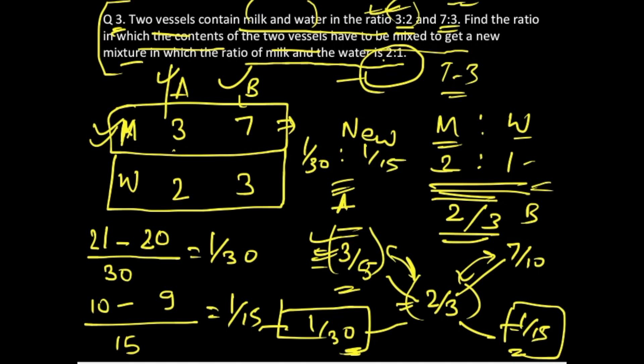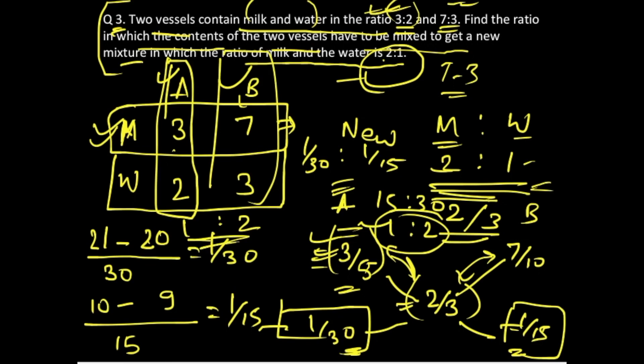How will you solve this particular fraction? You will just inverse them and take it to the other side, so that becomes 15:30, or 1:2 is your final answer. So if you mix the content of vessel A and vessel B in the ratio of 1:2, you will get the new mixture in which the overall ratio is 2:1.